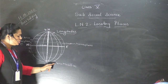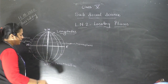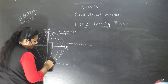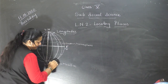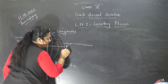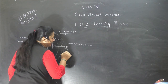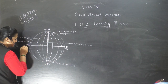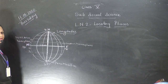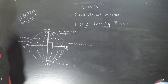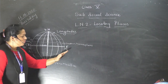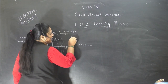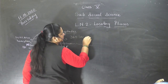The longitudes are also marked and they total 180 in the eastern hemisphere and 180 in the western hemisphere. So total how many longitudes do we have? 180 plus 180 — total we have 360 longitudes.